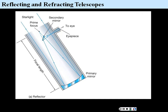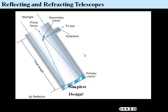Let's compare reflecting and refracting telescopes. On the left is a prime focus reflector telescope. Light comes in, reflects off the primary mirror, and focuses to a point called the prime focus — the simplest design, with only one parabolic mirror surface. That is the simplest design we could have for a telescope. To improve it, we might add a secondary mirror to deflect that prime focus to an eyepiece.